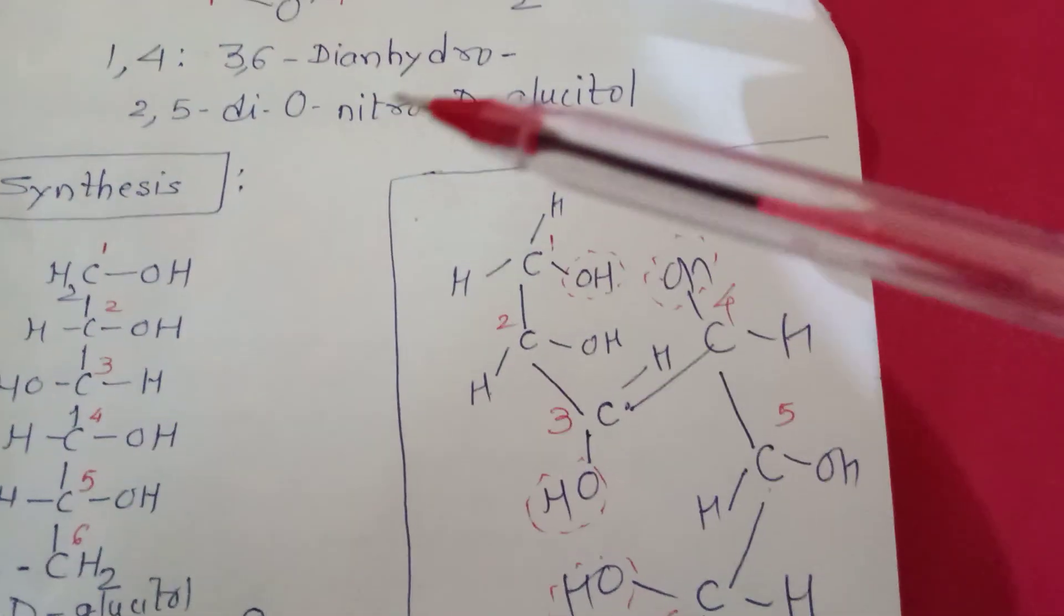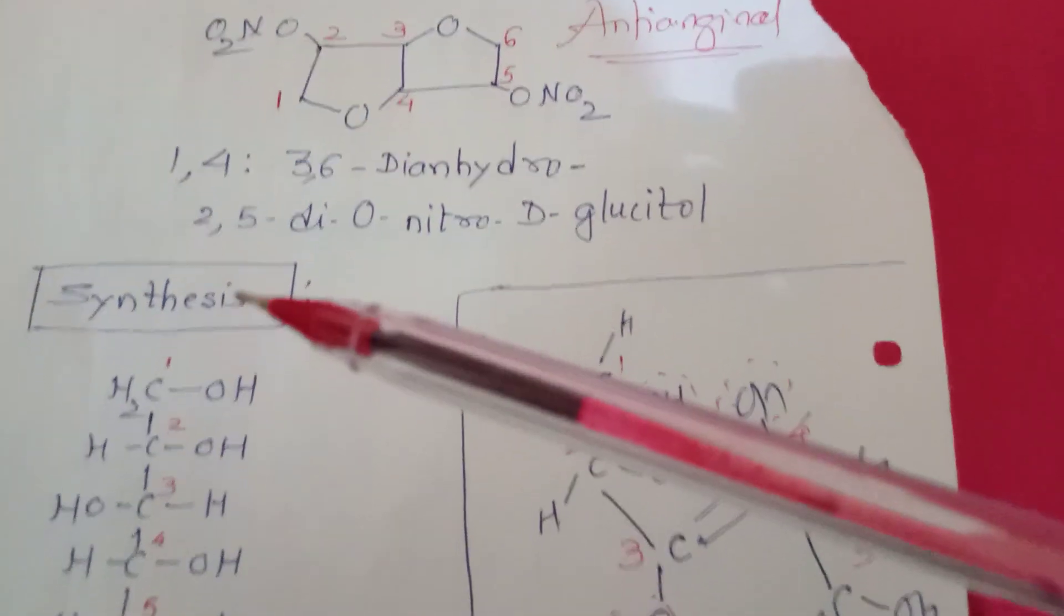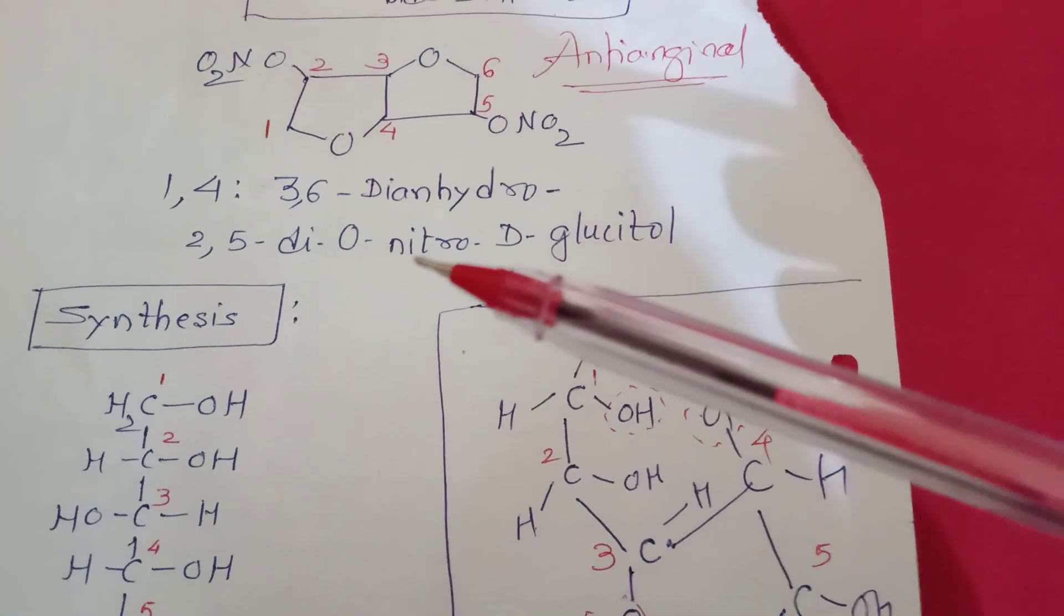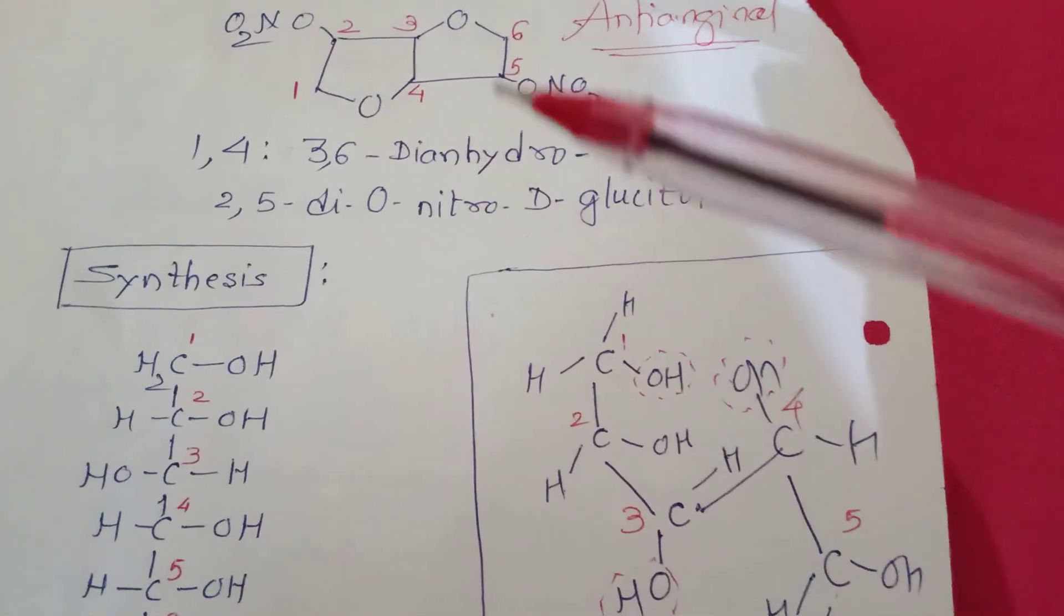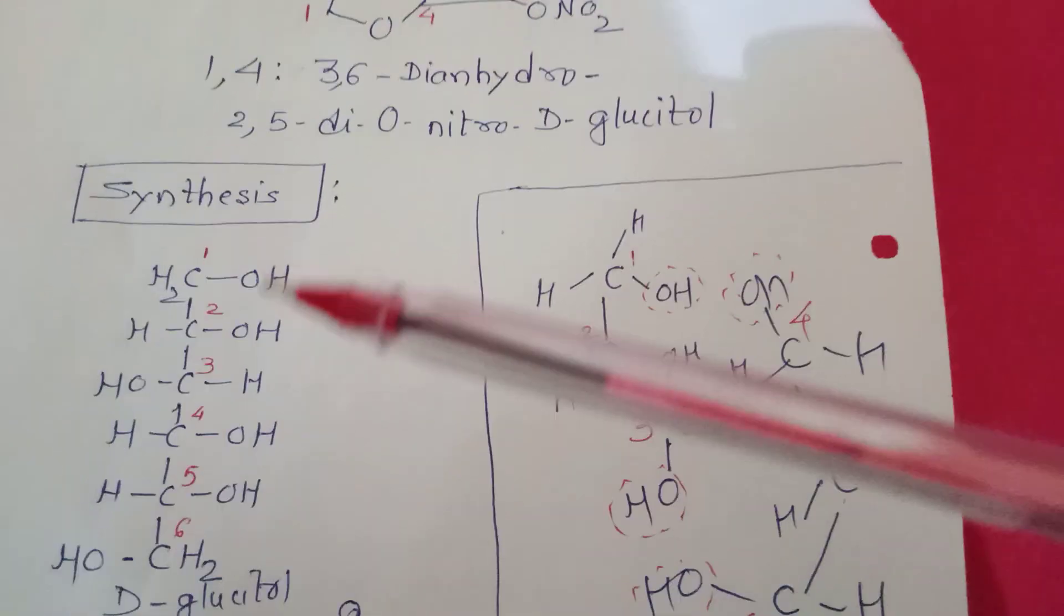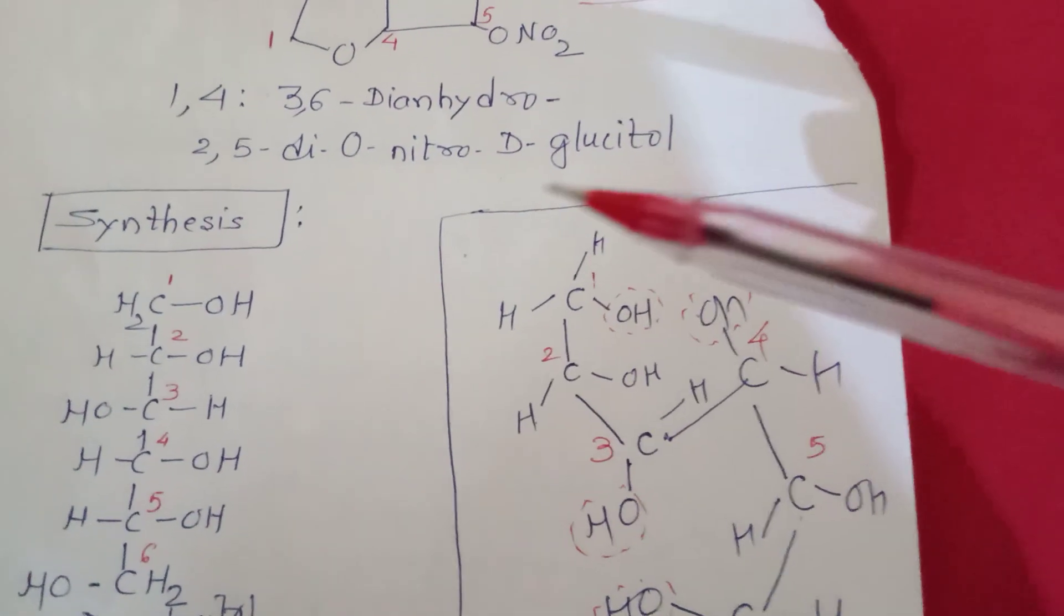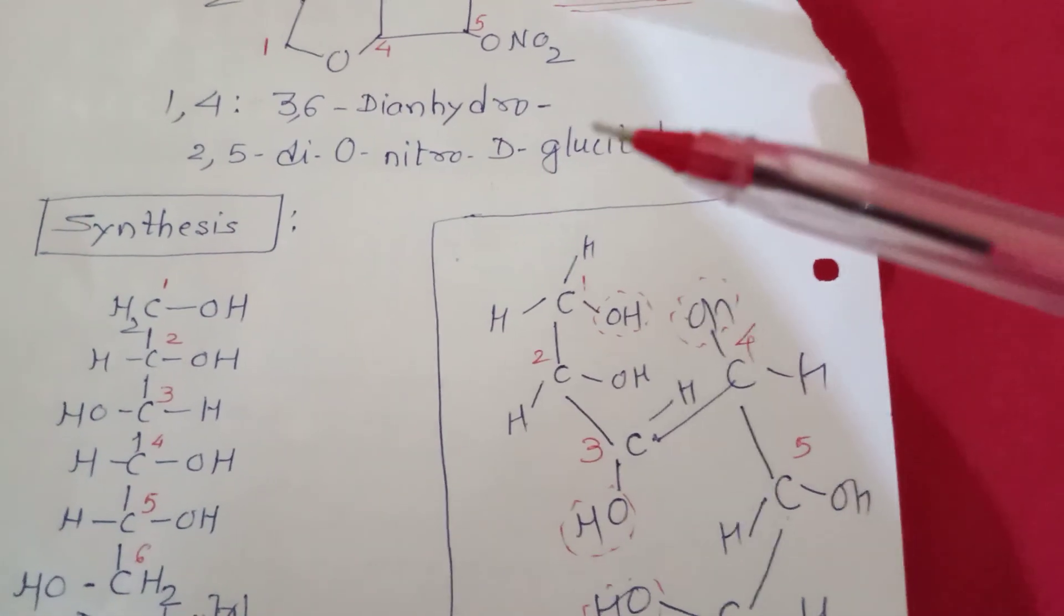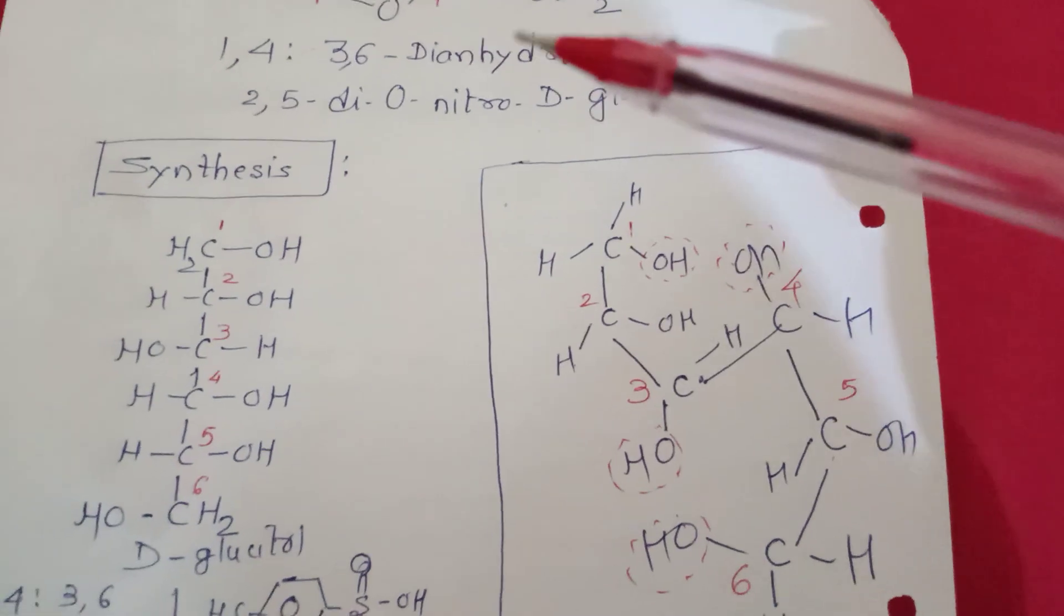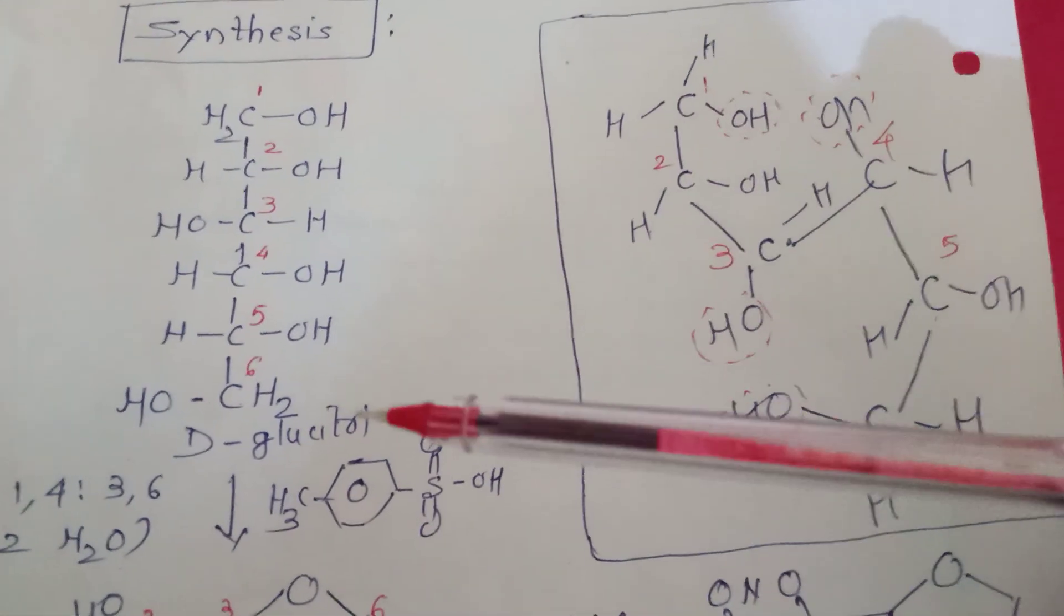The two nitro groups are on the oxygen, so it is 2,5-di-O-nitro. And though this structure is obtained from D-glucitol, that's why the name is suffixed with D-glucitol. So ultimately the starting material is D-glucitol.